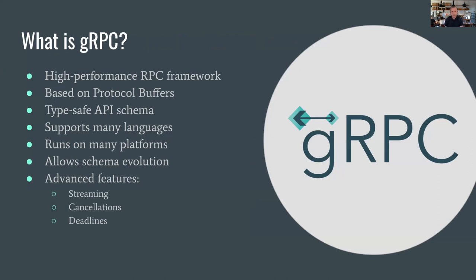Enter gRPC as a solution to all these problems. gRPC is an RPC framework initially developed at Google, based on protocol buffers. It lets us build type-safe API schemas — we define exactly what our services provide, what methods they have, what fields are inside those methods. It supports over 10 languages officially, runs everywhere — mobile, desktop, server, tablet. And because it's based on protocol buffers, it allows schema evolution: as new business requirements come in, you can add or rename fields and handle situations where an old client speaks to a newer server.